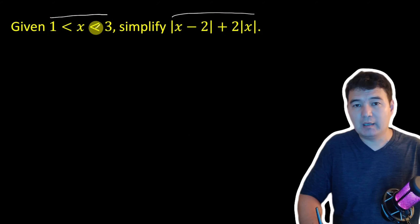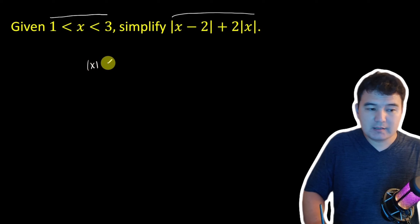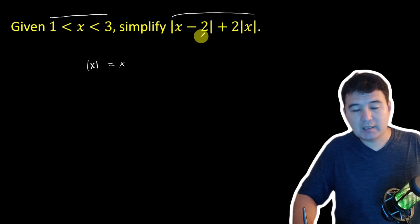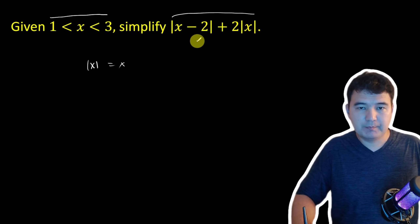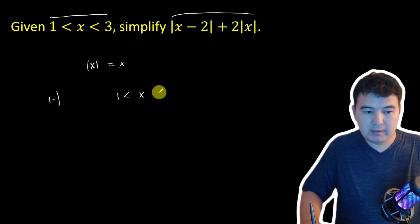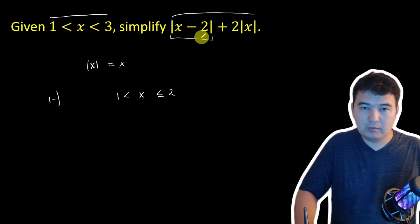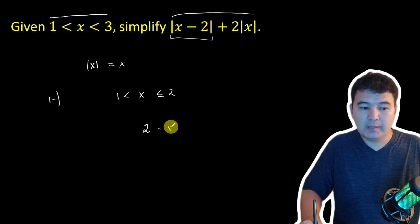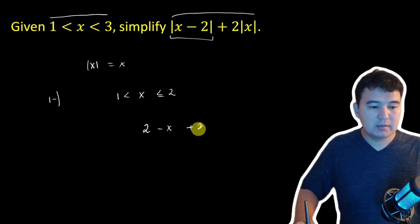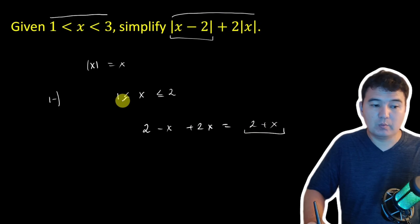Now, given that x is between 1 and 3, x is a positive number, so the absolute value of x is just x for all positive numbers — we can ignore that absolute value. But we cannot ignore the second one. If the number is between 1 and 2, when you open the absolute value, the result is going to be not x minus 2, but 2 minus x, because we should subtract the smaller number from the larger one to get a positive number, plus 2x. So that results in 2 plus x. This expression simplifies to 2 plus x if x is between 1 and 2.